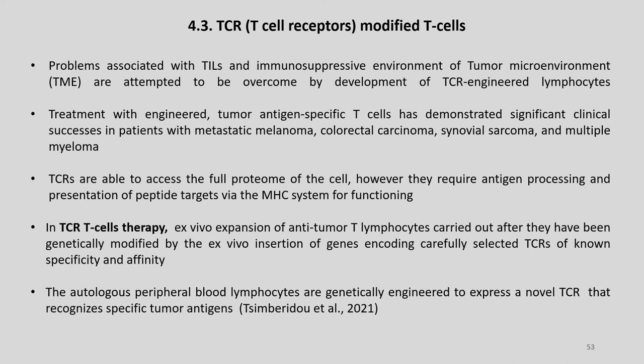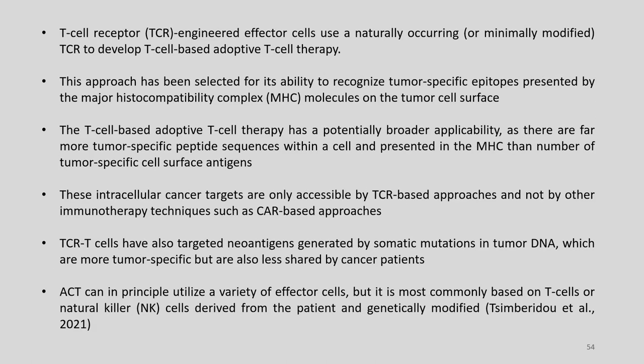TCRs are able to assess the full proteome of the cell; however, they require antigen processing and presentation of peptide targets via the MHC system for functioning. In TCR-T cell therapy, ex vivo expansion of anti-tumor T lymphocytes is carried out after they have been genetically modified by ex vivo insertion of genes encoding carefully selected TCRs of known specificity and affinity. The autologous peripheral blood lymphocytes are genetically engineered to express a novel TCR that recognizes specific tumor antigens, using a naturally occurring TCR to recognize tumor-specific epitopes presented by MHC molecules on the tumor cell surface.